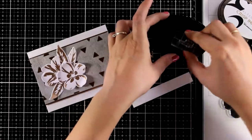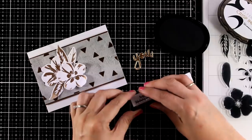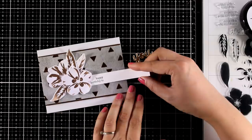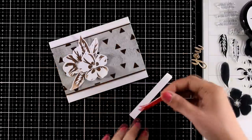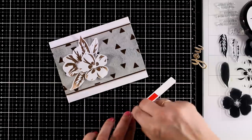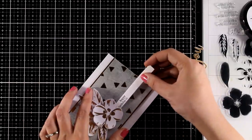Now I am also going to stamp a sentiment. The Flowering Cistus stamp set comes with many sentiments that you can use and that you can combine with the word you. So I went with the one that says happy birthday to and I stamped that on a thin strip of white cardstock which I'm just going to tuck underneath the flower.